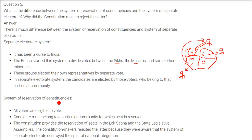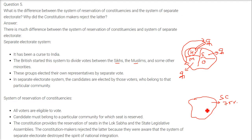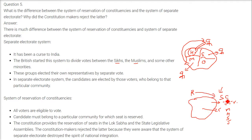In contrast, the system of reservation of constituencies allows all voters to be eligible to vote. However, the candidate must belong to the particular community for which the seat is reserved. For example, if a constituency has around 75% Scheduled Caste population and 25% others like Muslims, Hindus, Sikhs, then since the major chunk is SC, it is better that an SC person represents them — so that constituency is reserved for an SC candidate.